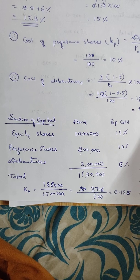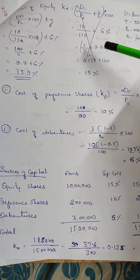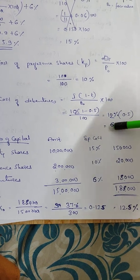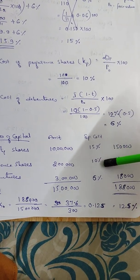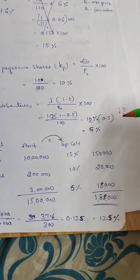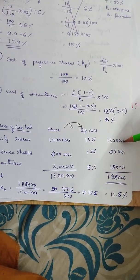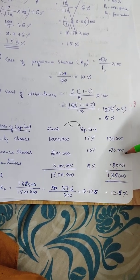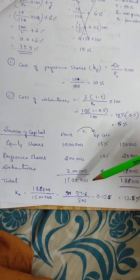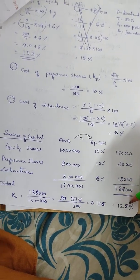Sources of capital: equity shares 10 lakh, preference shares 2 lakh, debentures 3 lakh — total 15 lakh. Cost of equity is 15%, cost of preference shares is 10%, cost of debentures is 6%. Multiplying: 10 lakh × 15% = 1,50,000; 2 lakh × 10% = 20,000; 3 lakh × 6% = 18,000. Total = 1,88,000. So K0 = 1,88,000 divided by 15 lakh = 12.5%. The weighted average cost of capital is 12.5%.